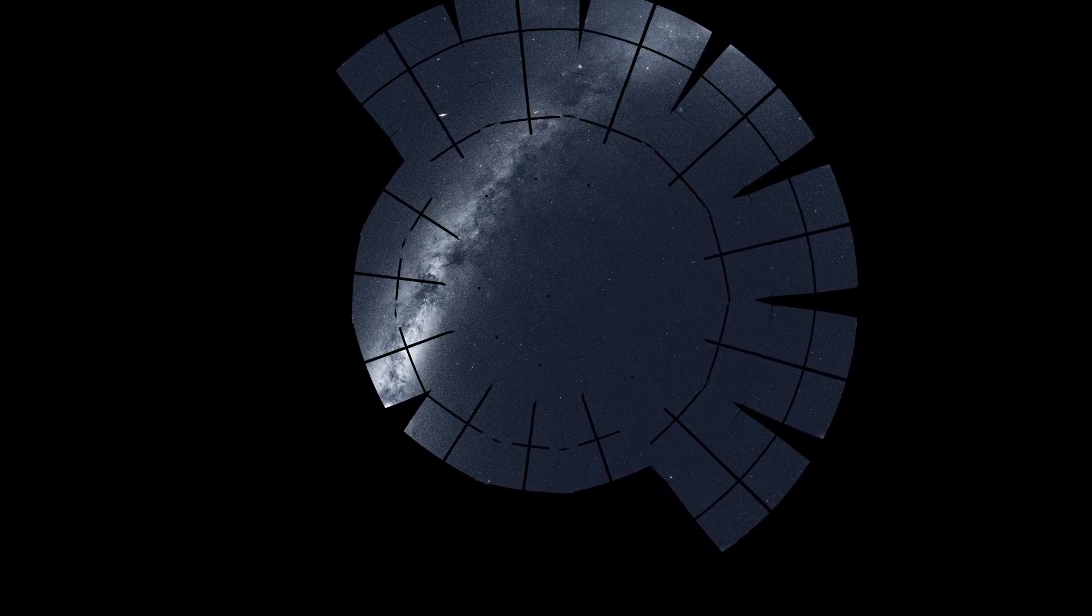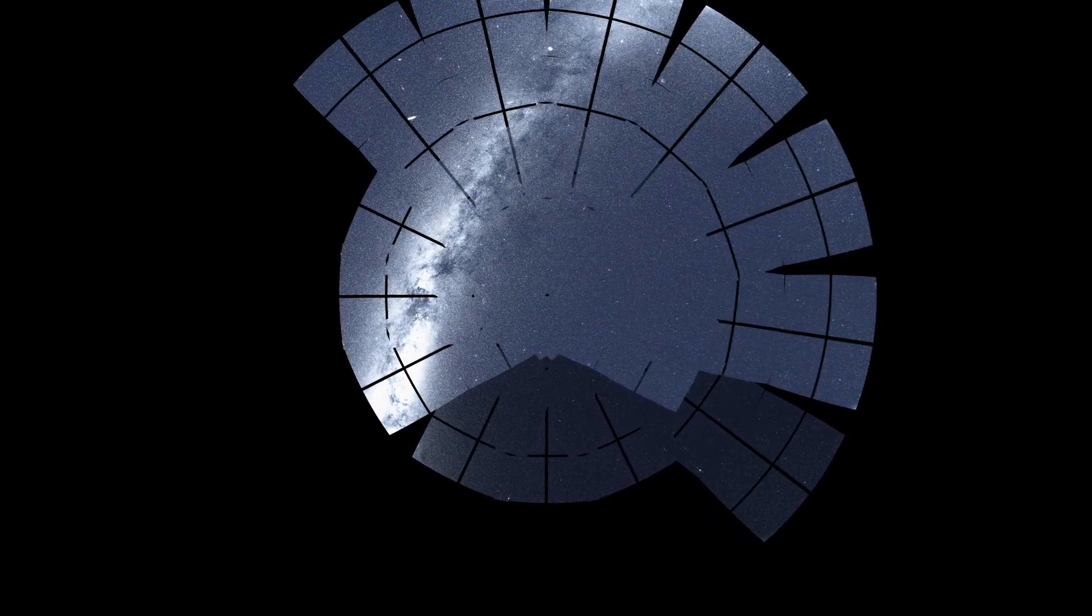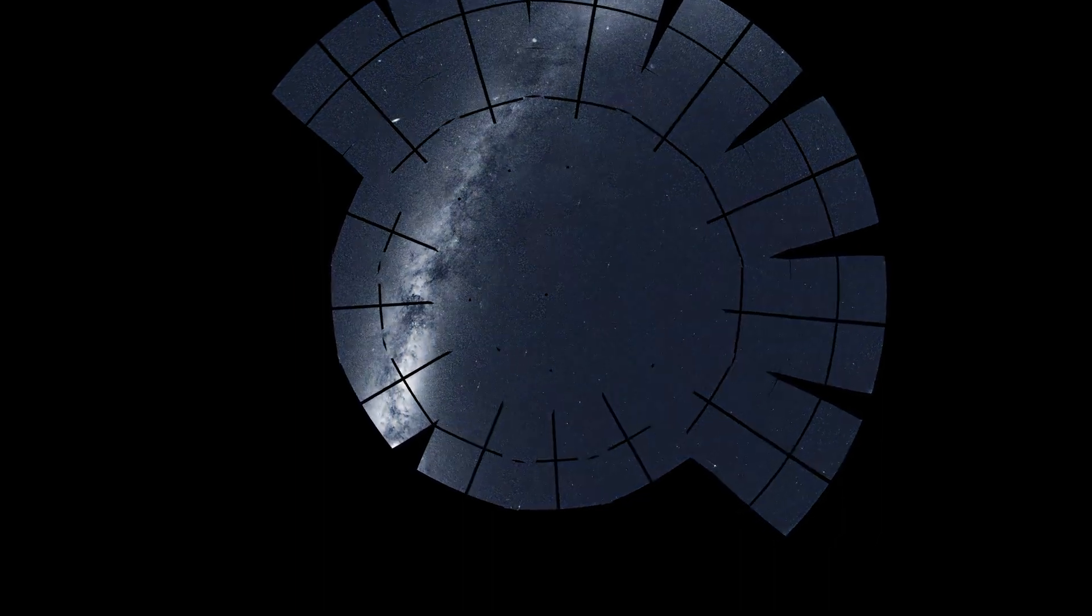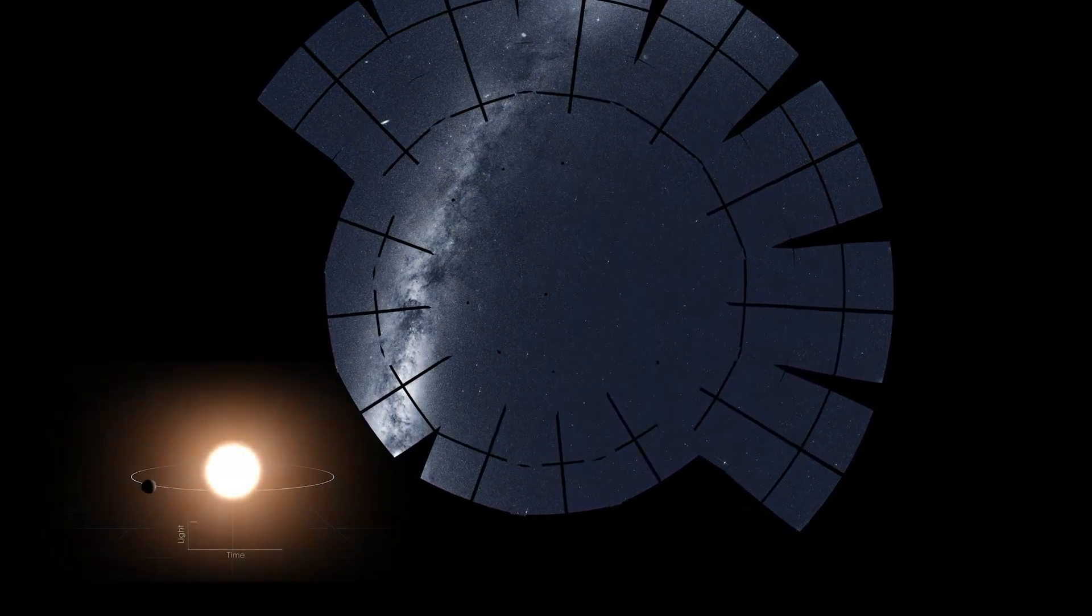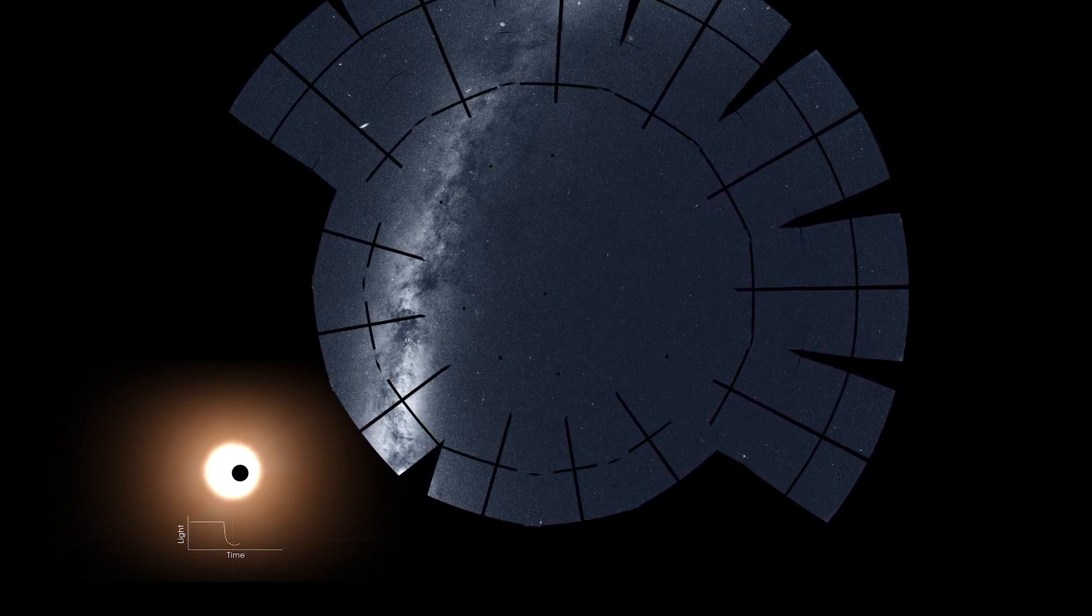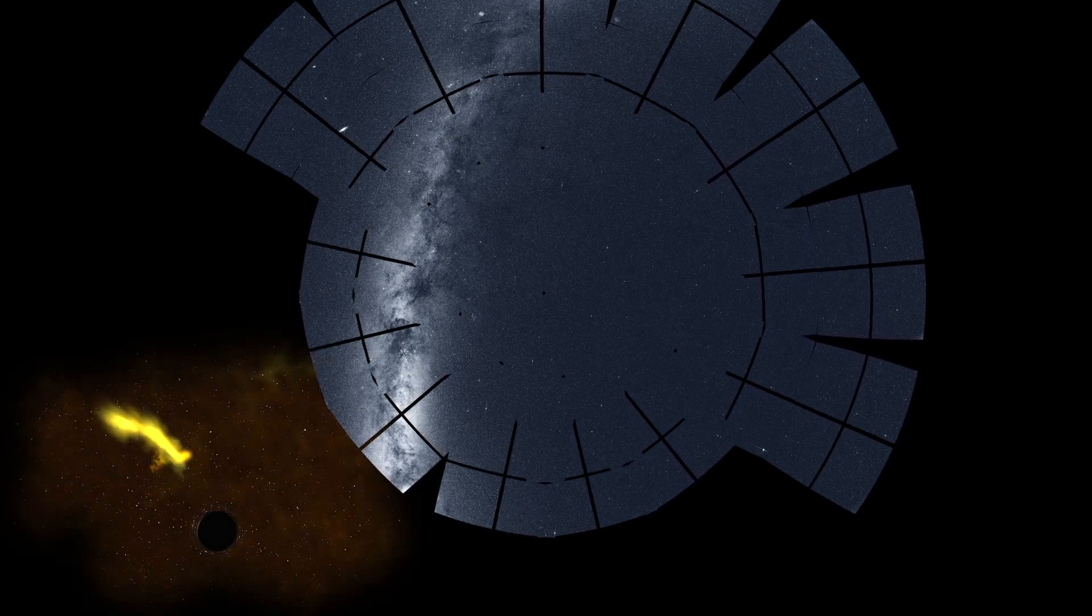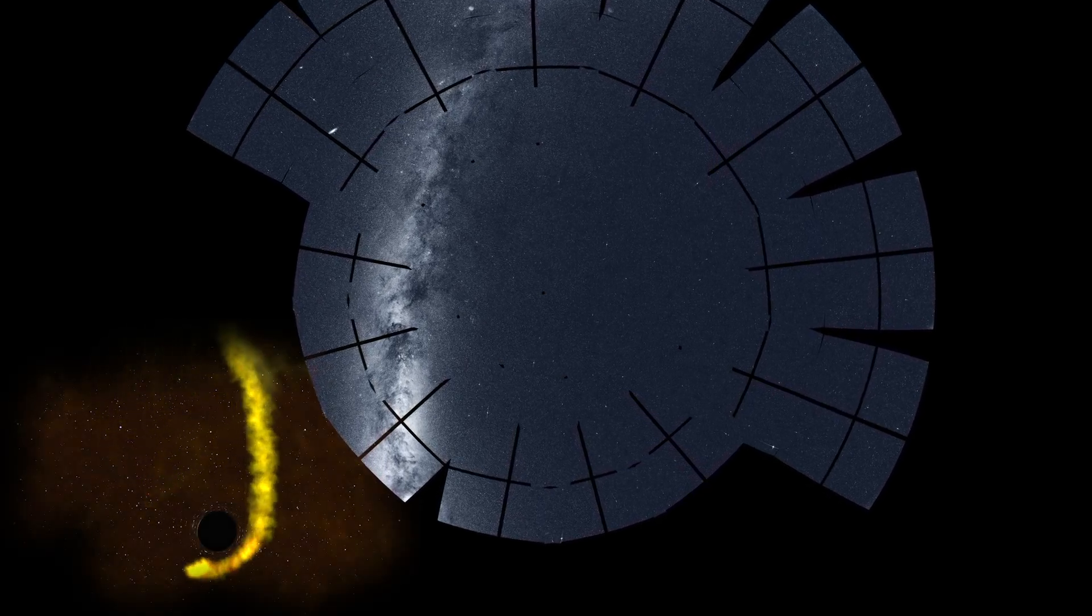To do this, TESS divided the northern sky into 13 sectors, and its four cameras monitored each sector for nearly a month. With these extended views, TESS looks for slight dips in starlight when distant planets pass in front of their host stars. But it also caught short-lived events, such as a black hole tearing apart a star that wandered too close.